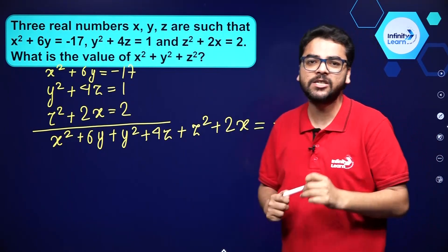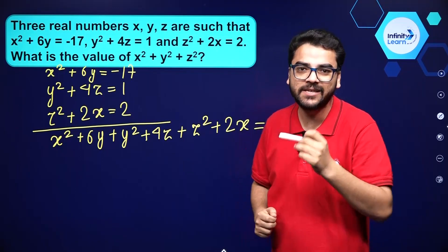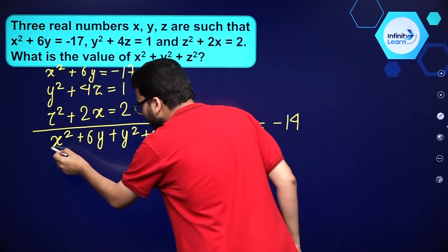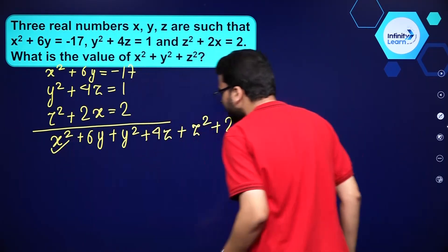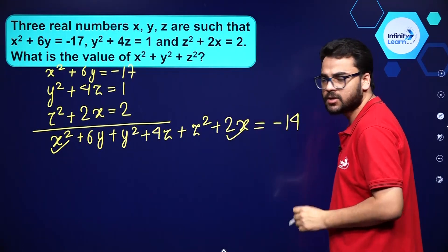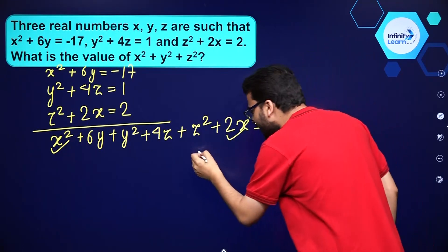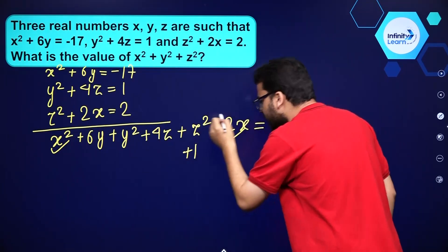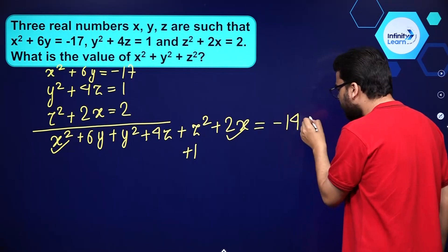Over here, we need to complete the square. You see we have got x square and we have got 2x over here. So can we add 1 on both sides of this equation?